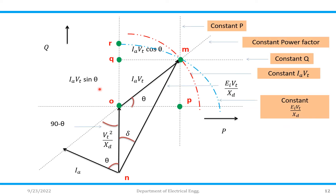This is the total diagram — let us quickly revise. The constant P region is where if it operates safely. Then the constant power factor line. Then the constant Q region. The red color curve is nothing but the constant IA·VT curve. And there is also constant EI·VT/XT. So these are the five loci that make up a generator capability curve.